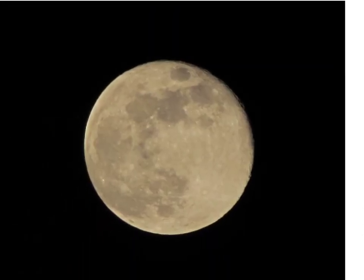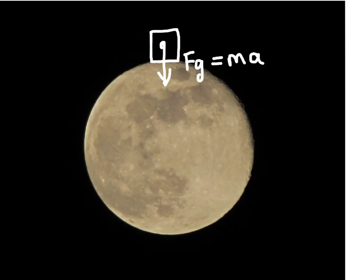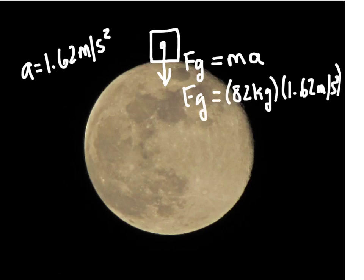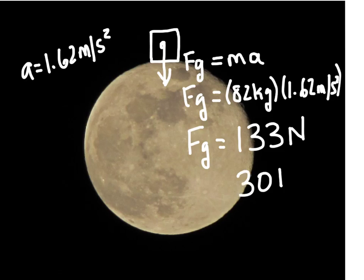Okay, so what if I was standing on the moon? The acceleration due to gravity on the moon is about one-sixth what it is on the earth, because the moon is so much smaller. And so the acceleration due to gravity on the moon is about 1.62 meters per second squared. And so if I calculate my weight on the moon, we would take my mass, which is 82 kilograms, multiply that by the acceleration due to gravity on the moon, and my weight on the moon would be about 133 newtons. And that's only about 30 pounds. And so if you want to lose weight, you can just go to the moon.